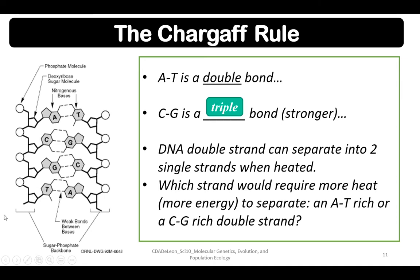DNA double strand can separate into two single strands when heated. Question: which strand would require more heat or more energy to separate — an adenine-thymine-rich or a cytosine-guanine-rich double strand? The answer is the cytosine and guanine-rich double strand, because it has a triple bond.